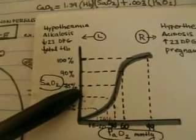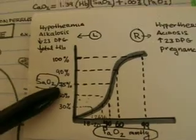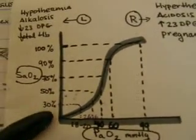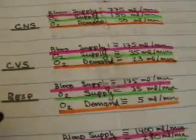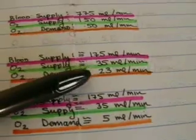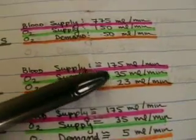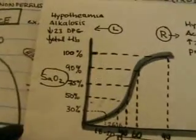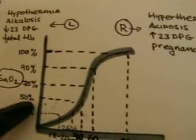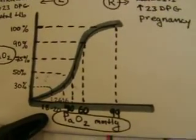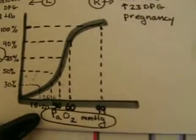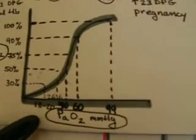A mixed venous oxygen saturation is generally around 75%. The 30% saturation usually represents the coronary circulation, which has a high oxygen extraction ratio — as discussed previously. The oxygen supply is approximately 35 mLs per minute, and the high extraction of about 23 mLs per minute leaves about 30% saturation of the hemoglobin molecule once blood leaves the coronary circulation. The partial pressure within the coronary circulation after oxygen extraction is roughly 18 to 20 mmHg.